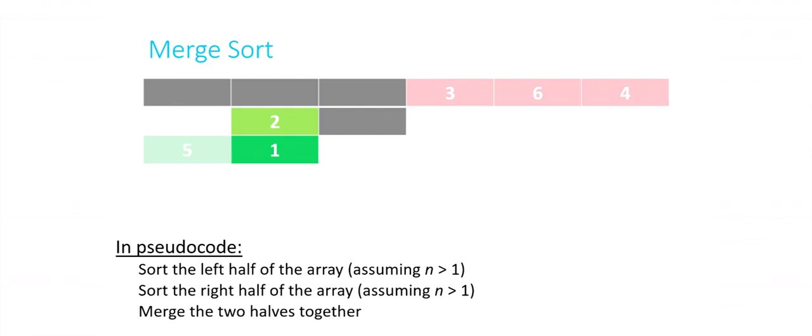So now, remembering we're focusing on the left half of the overall brick red array — the purple array — we have sorted its left half (five) and its right half (originally two and one, now merged into one, two). By this point with respect to the purple array, we've completed steps one and two: we've sorted the purple array's left half and its right half.